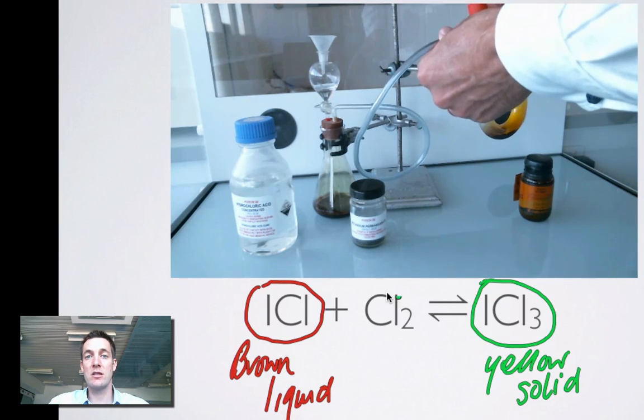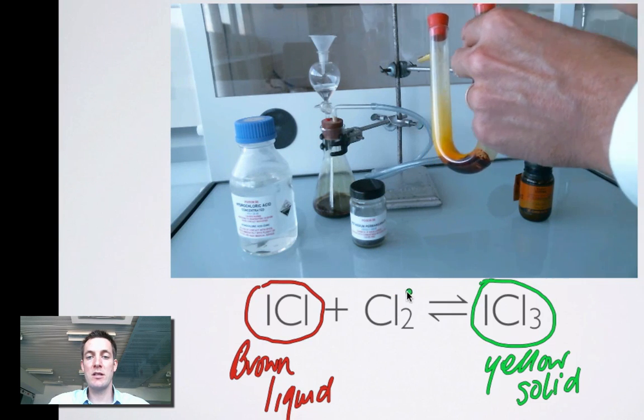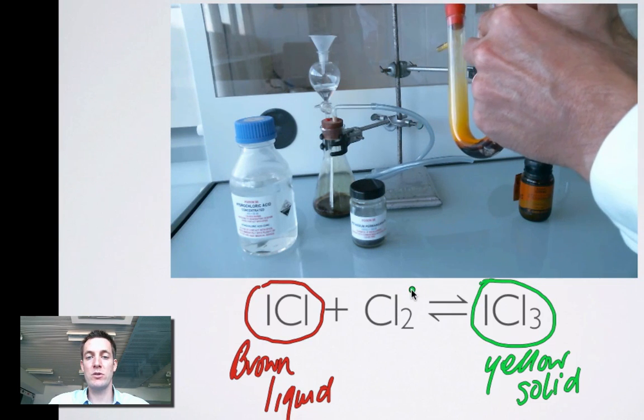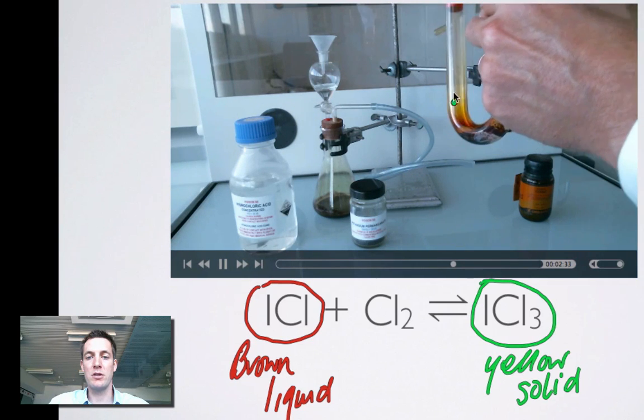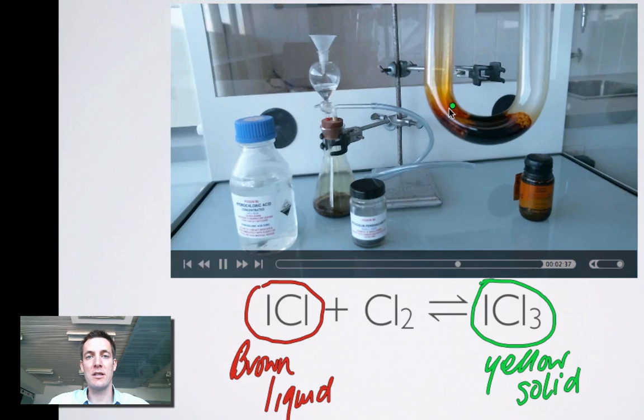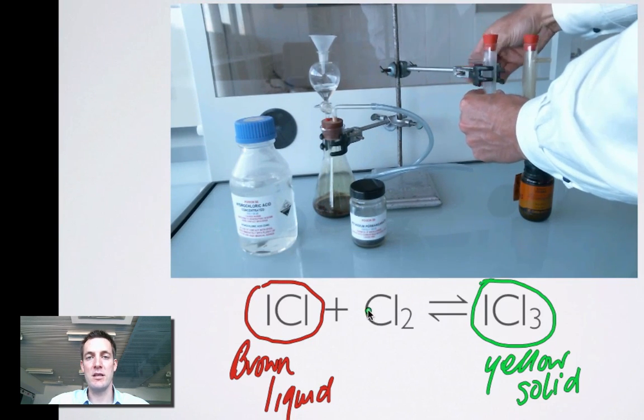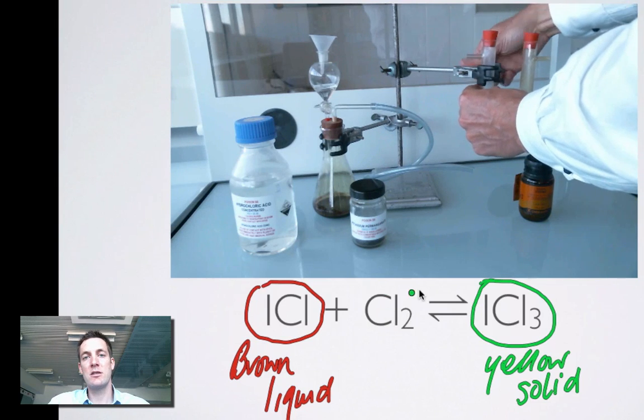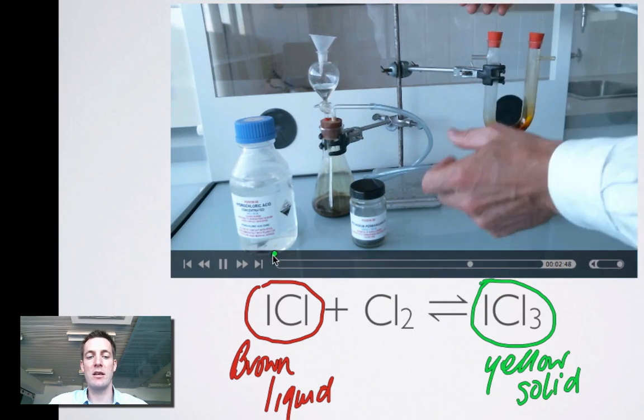In other words, it looks like this equilibrium is using up the stuff that we're adding. Here once again, we're just going to remove the chlorine. So we're going to blow through the tube. Simply blowing the chlorine out of that tube and you can see that yellow solid disappearing there and turning back into that brown liquid. So once again, remove chlorine, the system replaces it. Add chlorine, the system removes it. So we've seen those changes happening there in that system.